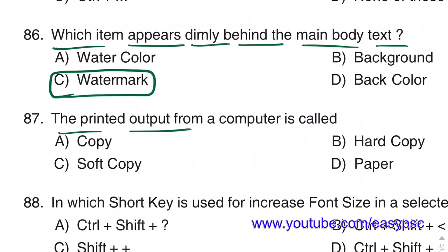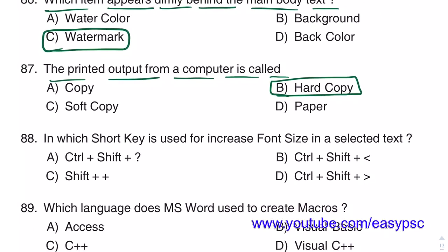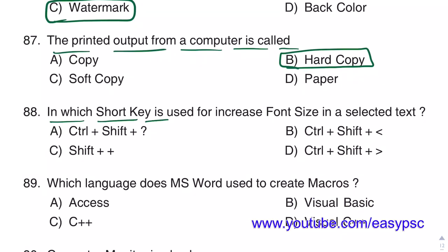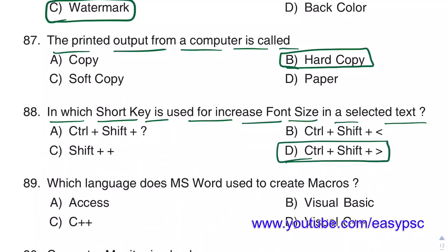The printed output from a computer is called a Hard Copy. The shortcut key used to increase the font size of selected text is Ctrl + Shift + Greater Than.